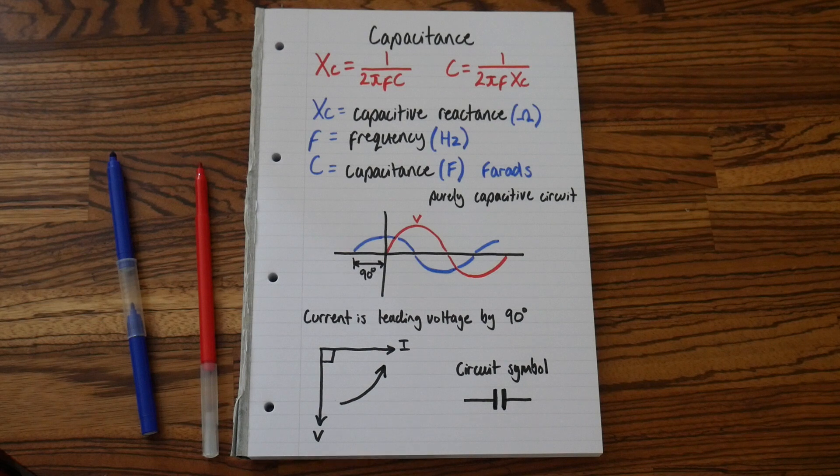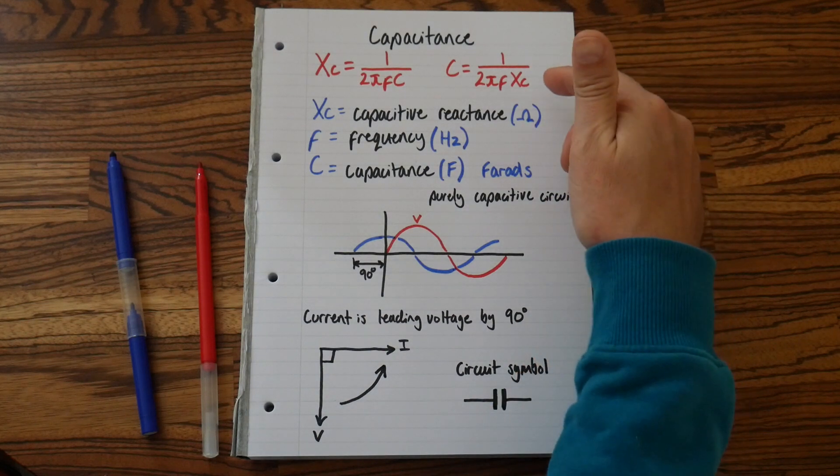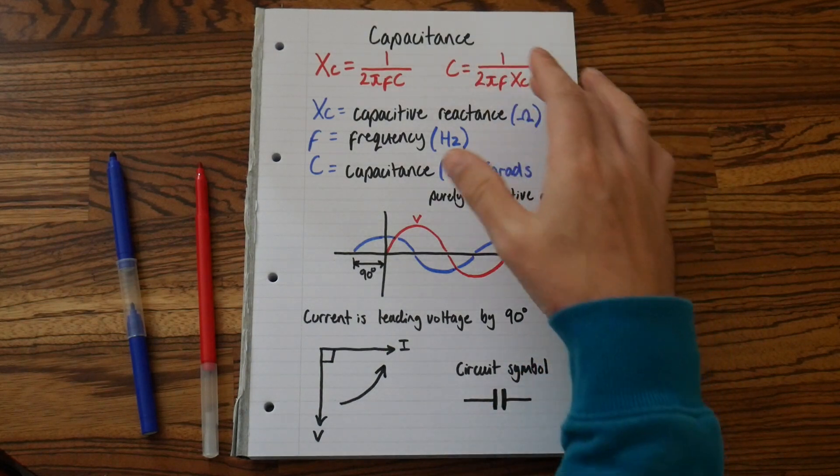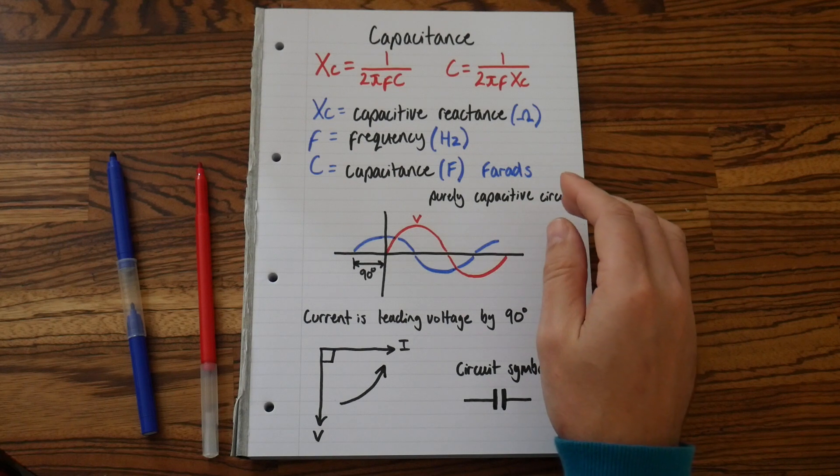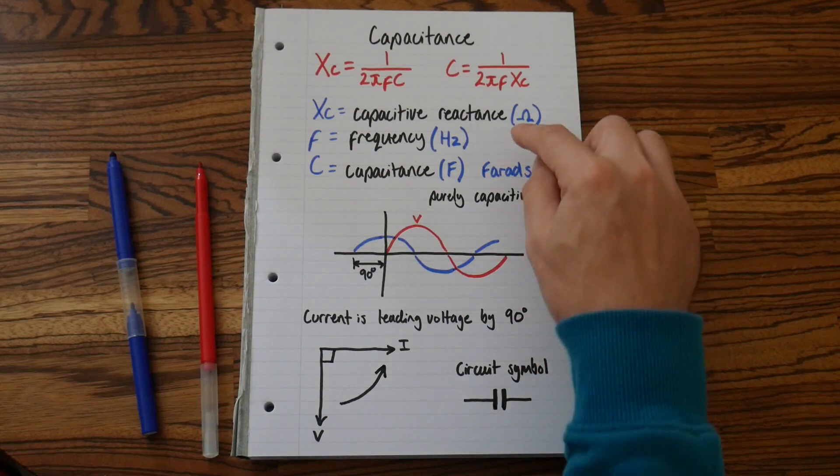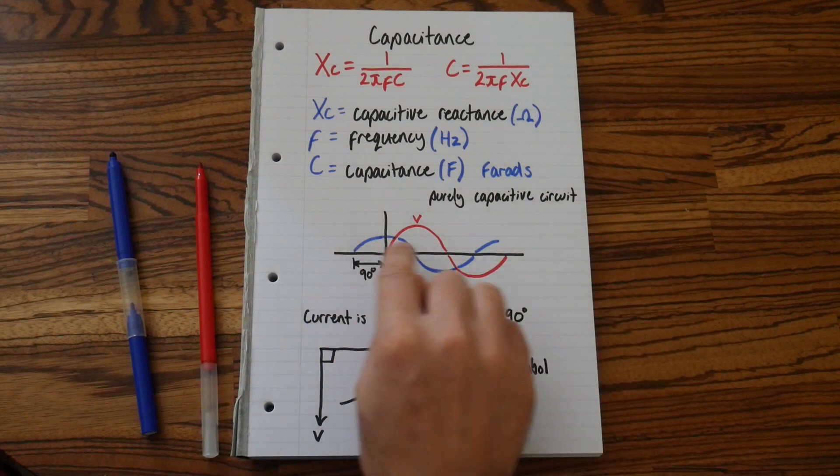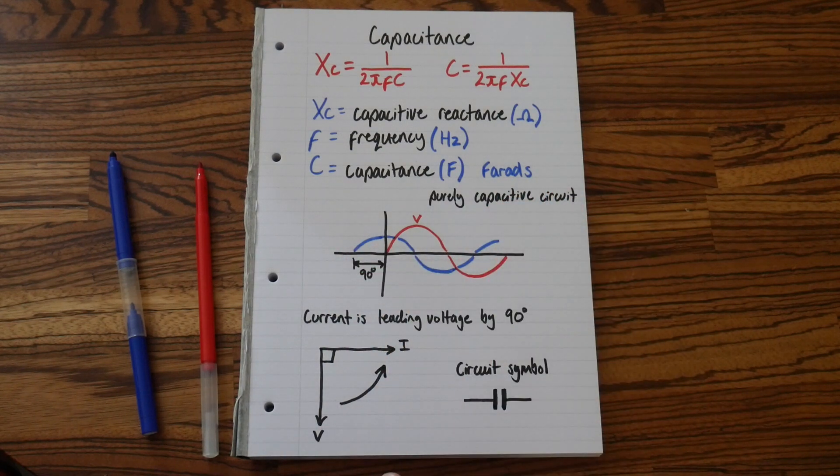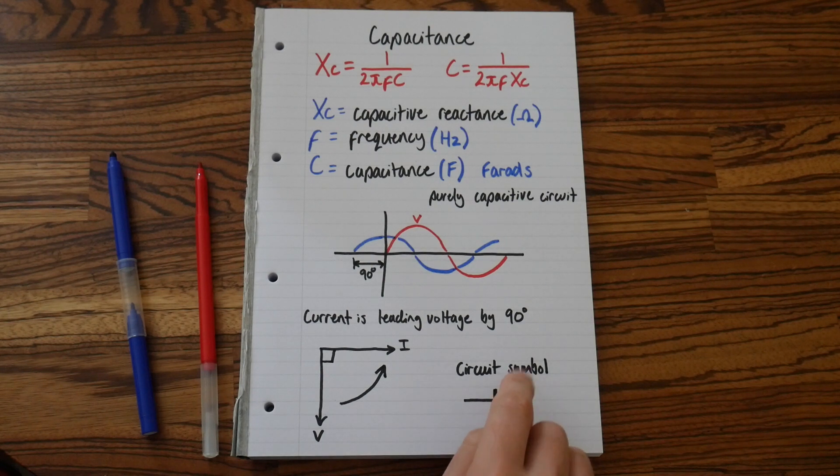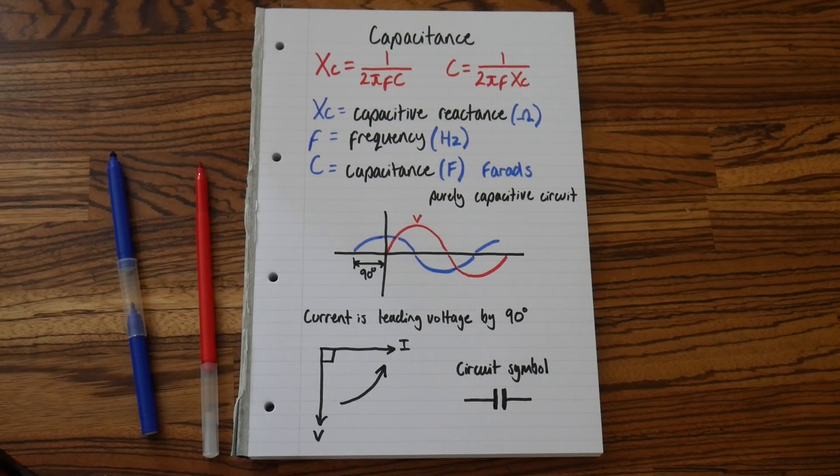So you set out your revision notes like this for capacitance definitely. We've got our equation and that's been transposed both ways. What the values and symbols mean. And we have this detail here about a purely capacitive circuit. Current leads voltage by 90 degrees. This is the phasor diagram for a purely capacitive circuit. And here's the circuit symbol for a capacitor.